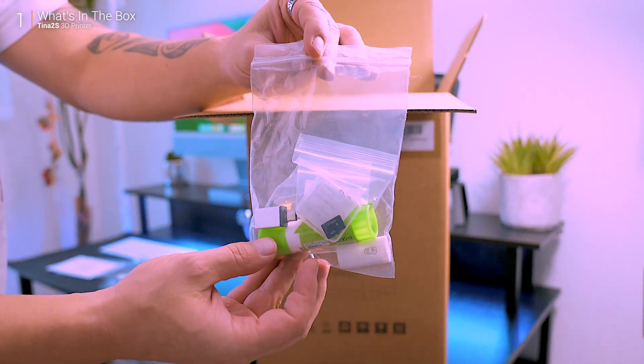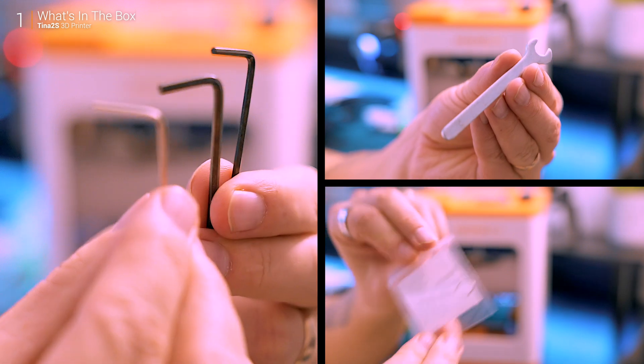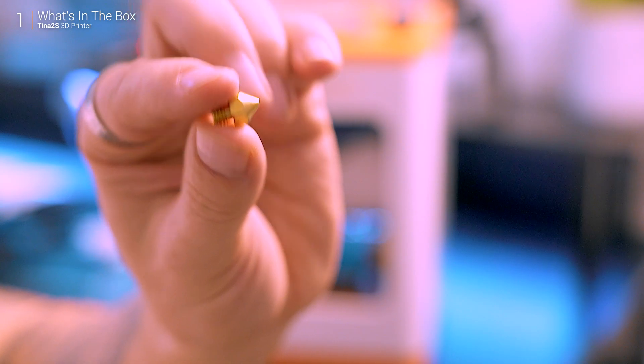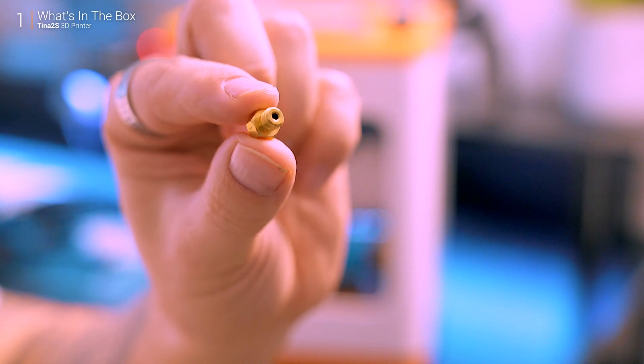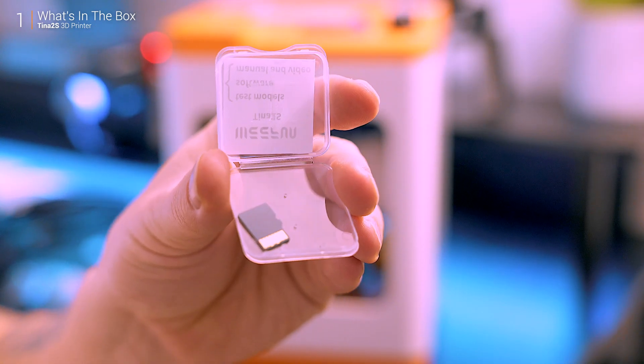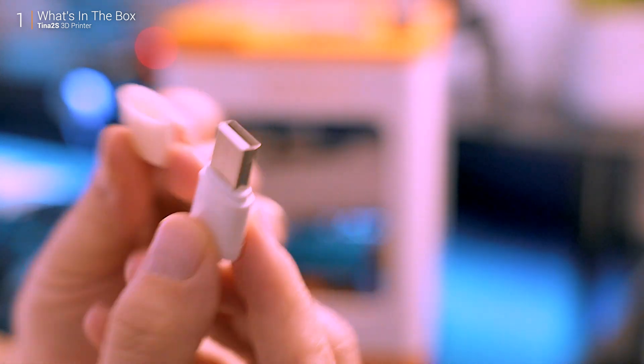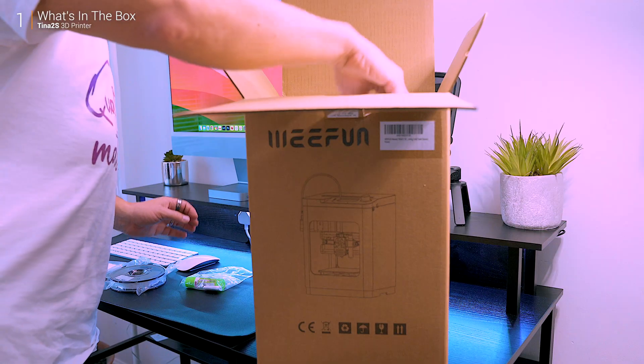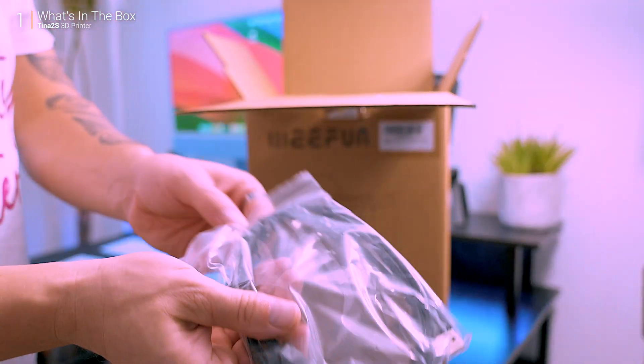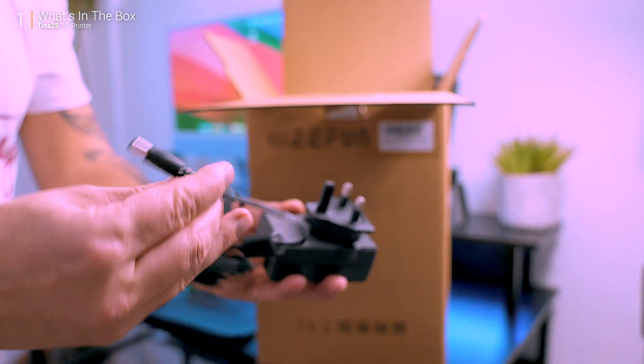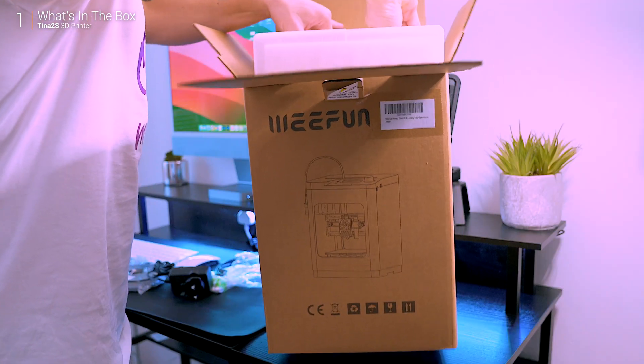Digging deeper, you get a bag of tools and accessories. Extra nozzles are included because stuff happens. There's also an SD card preloaded with test files and Wifun's Webuilder slicing software, plus a USB-A adapter for the card—super clutch if your laptop ditched the SD slot. Rounding it out are a USB cable, power adapter, and the star of the show, the printer itself.